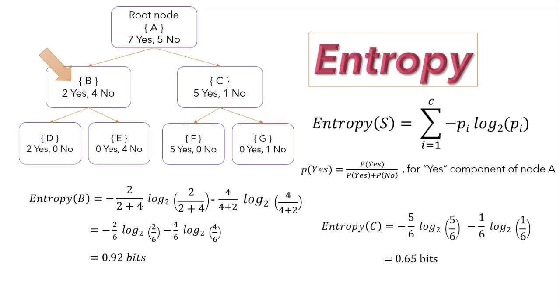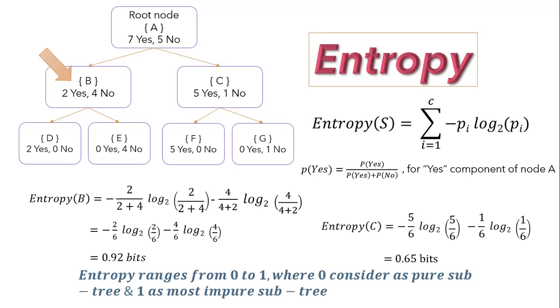By same means, we can compute entropy for node C as 0.65 bits. One thing to add here is that entropy ranges between 0 to 1, and we consider 0 as pure subtree whereas 1 can be considered as worst scenario or most impure subtree when both yes and no are equal in number. Each time when we compute entropy, we consider the value which is more closer to 0. Now we can say that node C is having less value, so we can continue with node C. But this is not it.